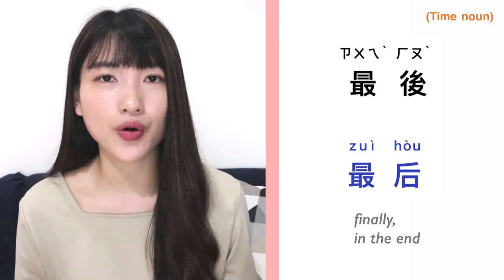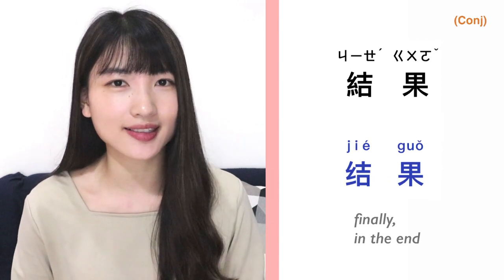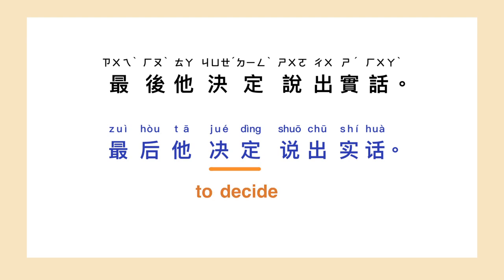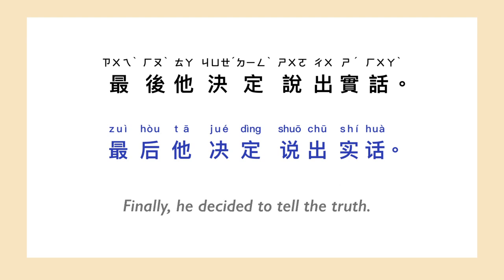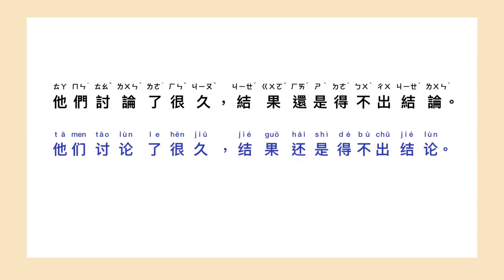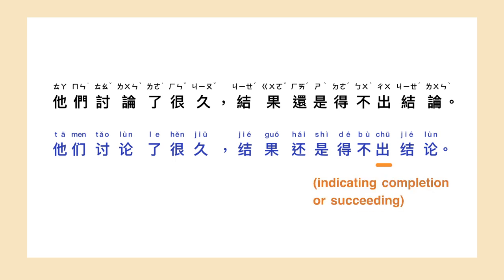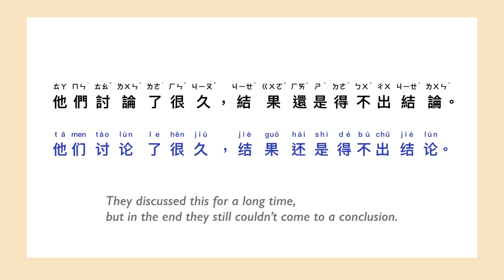Finally, we're going to talk about 'finally'. When you want to tell the other person what happened in the end, you can say 最後 or 結果. For instance: 最後他決定說出實話 — Finally, he decided to tell the truth. 他們討論了很久,結果還是得不出結論 — They discussed this for a long time, but in the end they still couldn't come to a conclusion.